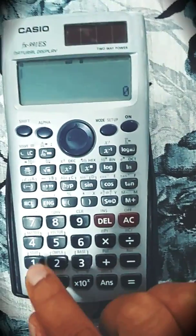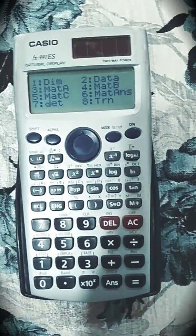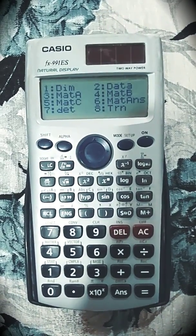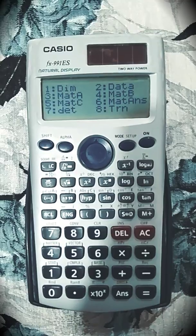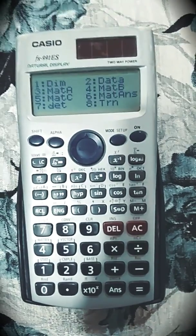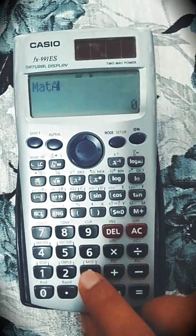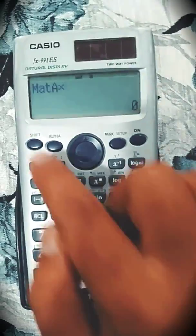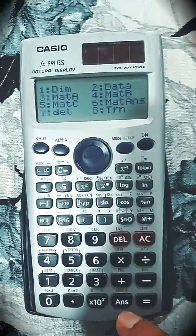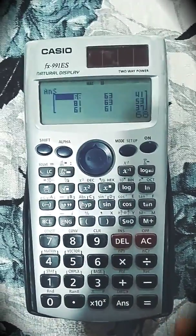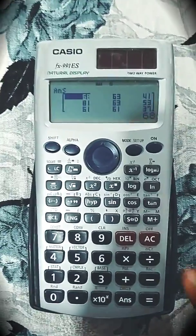So now to do the matrix operation, shift 4. So now here you can see matrix A, matrix B, matrix C, and determinant and transpose. So if I want to multiply matrix A with matrix B, I'll just put 3, then into, again shift 4. Now see, matrix B is available at number 4, so I'll press 4, just press equal to. It will give the multiplication of these two matrices.